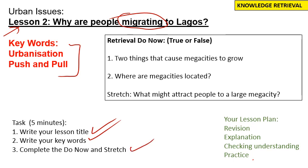Third, complete the retrieval do now, just to see what we remember from lesson one. If you haven't seen lesson one, you can still have a go at this anyway, or you can go back and look at the material in lesson one. You may want to pause this video while you do those three things, and I will continue in five seconds.